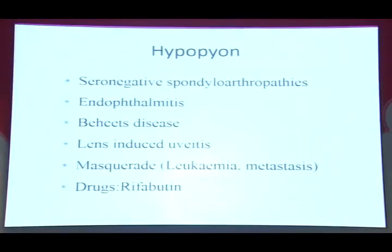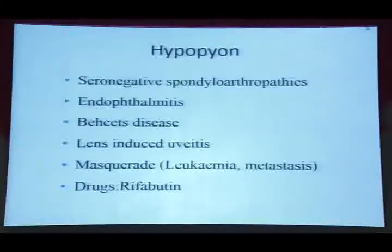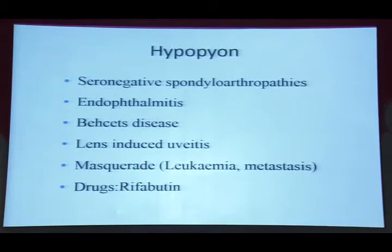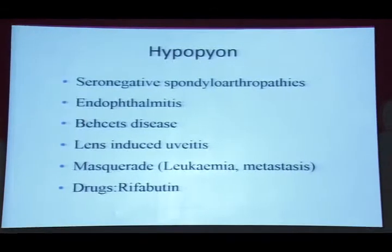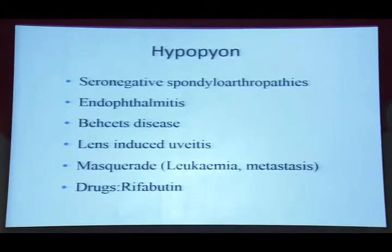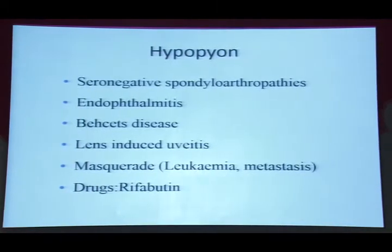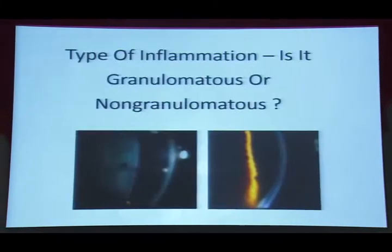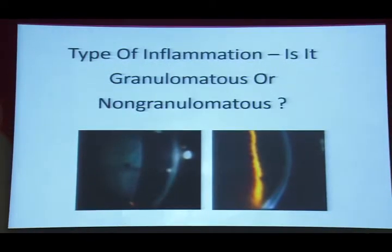The common differentials for hypopyon include seronegative arthritis, endophthalmitis, Behcet's, lens-induced uveitis, masquerades, and certain drugs like rifabutin. The moment we see a patient with uveitis, it is important to define the type of inflammation.